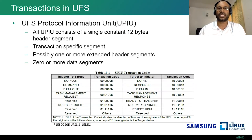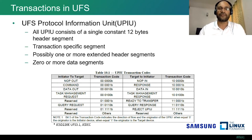Each UPIU contains a single constant 12-byte header, a transaction-specific segment, possibly one or more extended header segments, and zero or more data segments. This table lists all the UPIUs supported in UFS: command UPIU, response UPIU, task management UPIU, task response UPIU, and so forth. All these UPIUs contain a single constant 12-byte header, and the transaction code indicates what kind of UPIU it is.